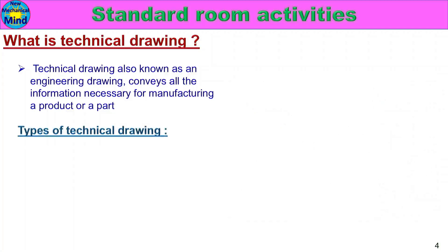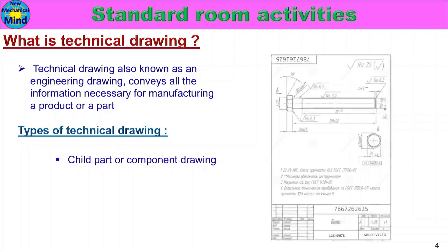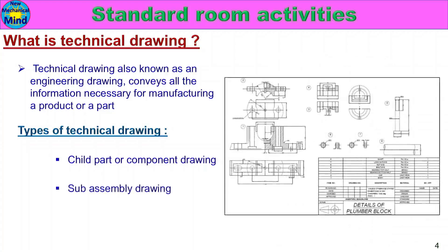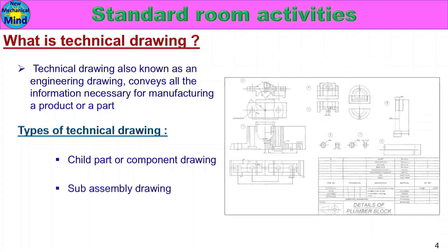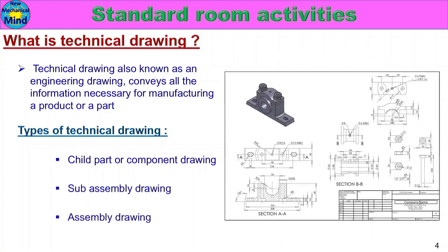Types of Technical Drawing. There are three different types: Child Part or Component Drawing, Sub-assembly Drawing, and Assembly Drawing.